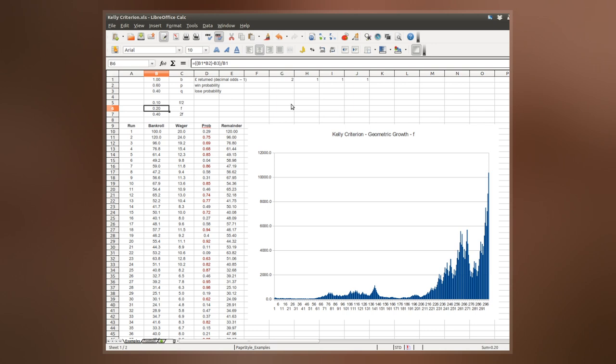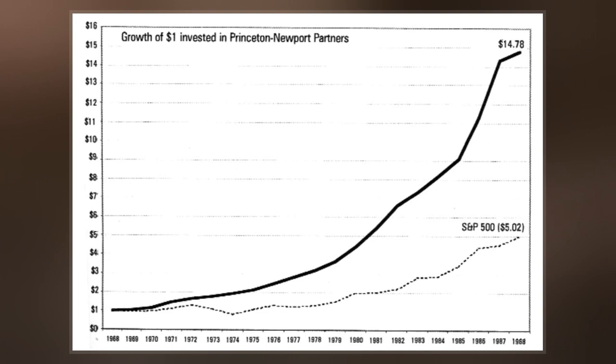For an even money bet, the Kelly criterion computes the wager size percentage by multiplying the percent chance to win by two, then subtracting 100%. So, for a bet with a 70% chance to win, the optimal wager size is 40% of available funds.